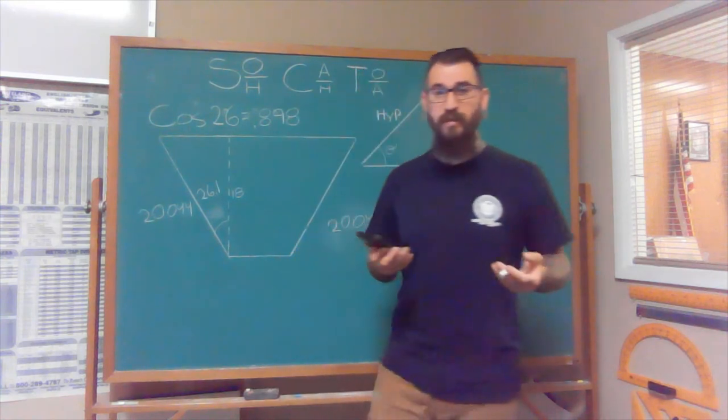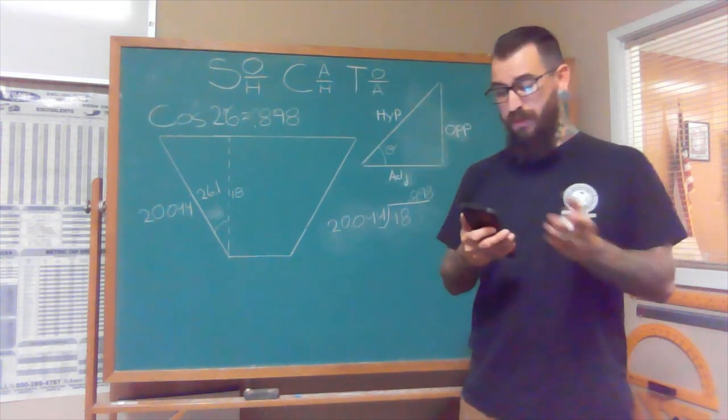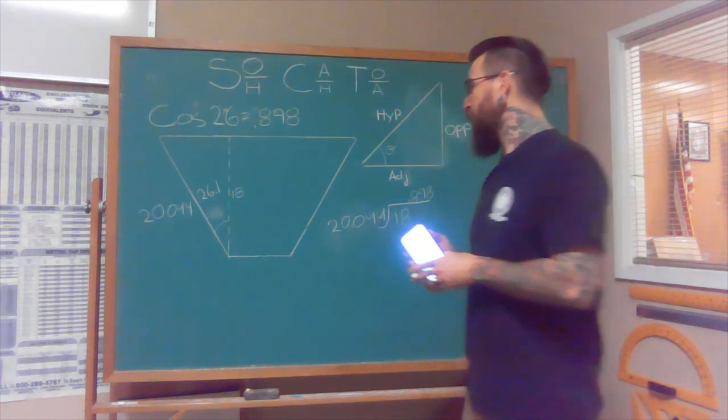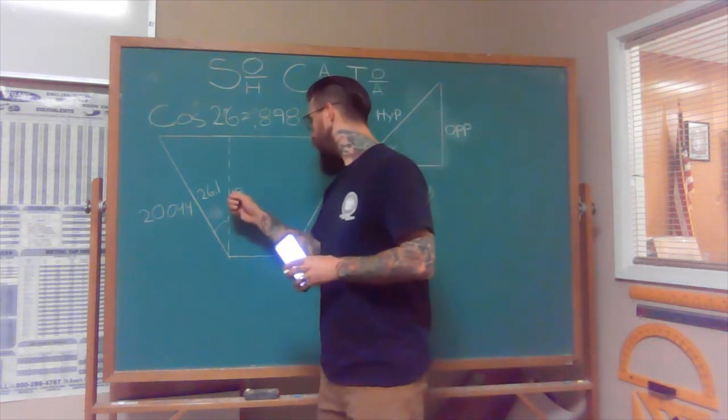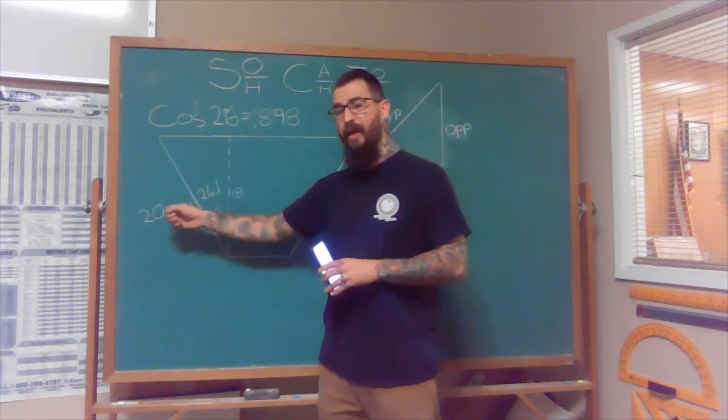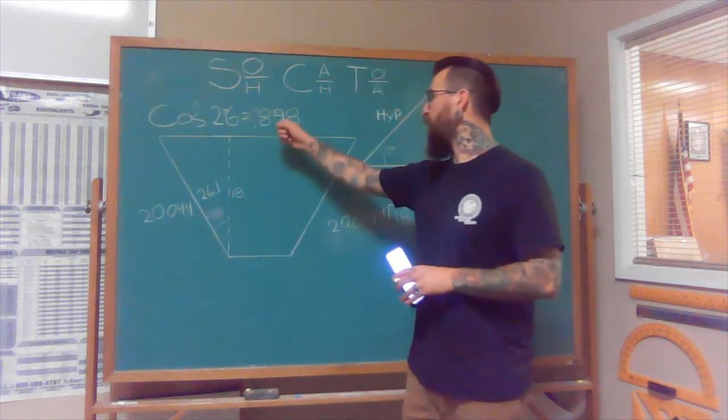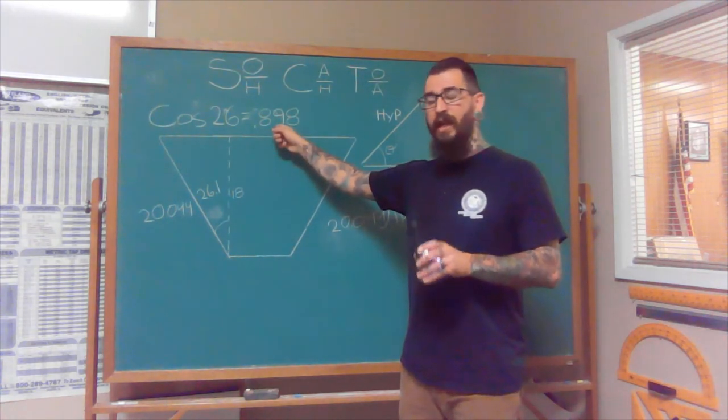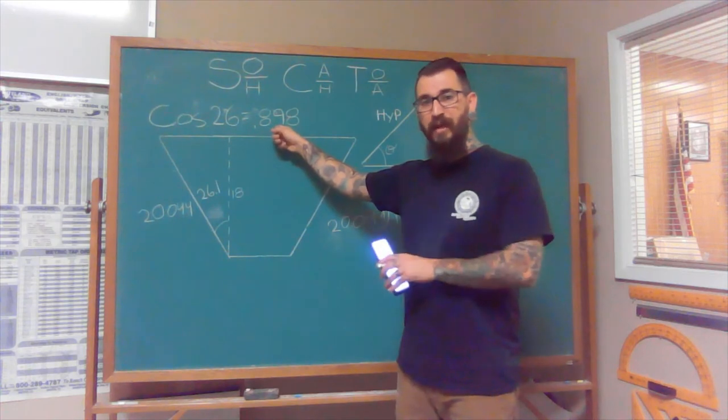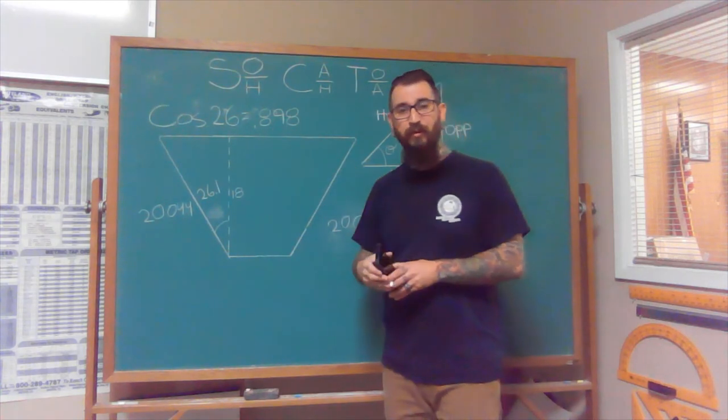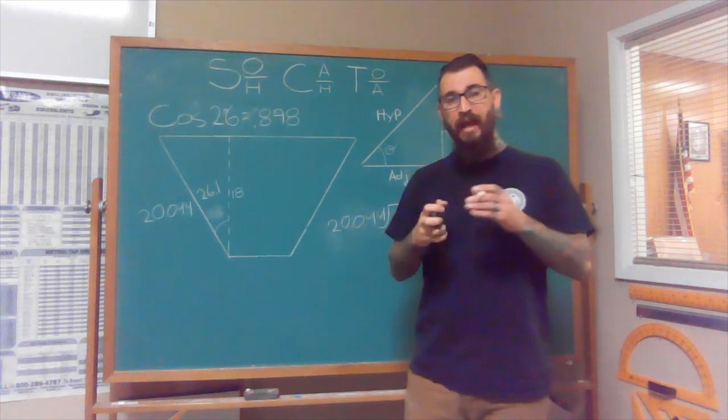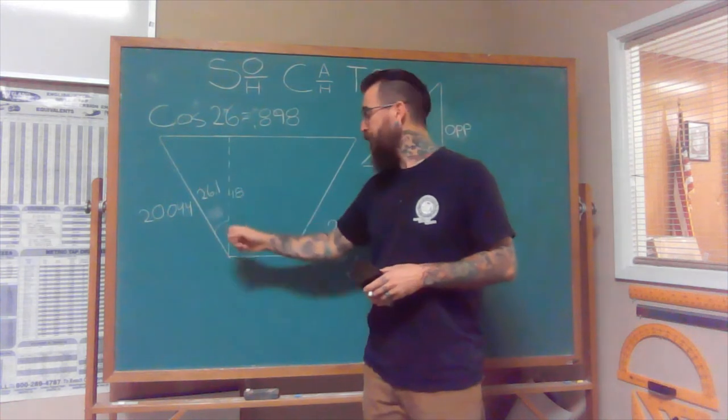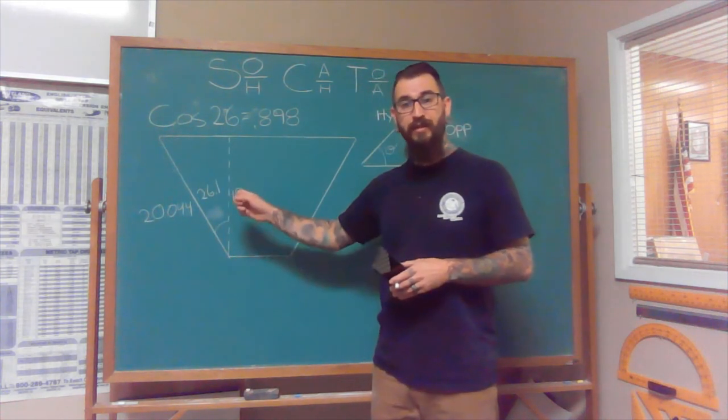And of course, with decimals and stuff, it gets on calculators, it puts it out about 10 decimal places. So it starts getting extremely accurate. So when we divide our adjacent by our hypotenuse, it gave us a ratio. And then I was able to plug in on my calculator, what angle has that ratio assigned to it. And that's really the most important way to look at this is every angle has a ratio assigned to it. For every inch I move in one direction, it has to go a certain distance in that direction.